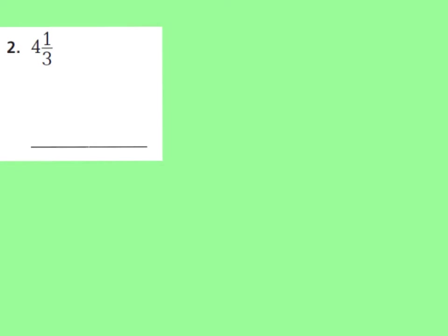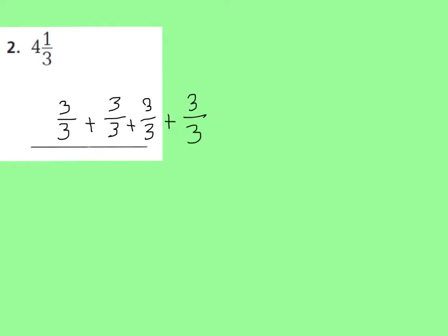Go ahead and do this one with me in your GoMath book. We have 4 wholes and 1 third. The denominator tells me what my whole will be divided into. So if I have 4 wholes cut into thirds, that first one is going to be 3 thirds — that's 1 whole — plus 3 thirds, that's 2 wholes, another 3 thirds is 3 wholes, and another 3 thirds is 4 wholes.